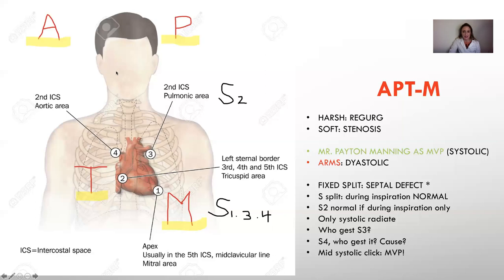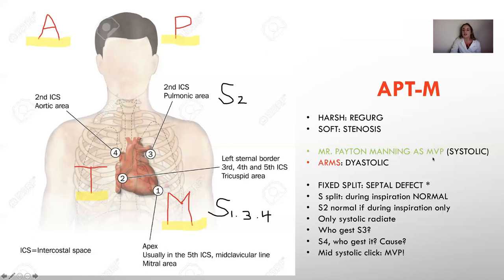His name is Peyton Manning. Funny story — I had made a video earlier and said I'm not a sports fan and I'm from another country, so I did not know who he was and said he was a baseball player. Turns out he's a football player. Anyway, for the purposes of the murmurs, all you need to know is that he is an athlete with very strong arms. Mr. Peyton Manning as MVP: MVP stands for most valuable player or mitral valve prolapse. MR is for mitral regurg, the P and M for physiologic murmur, AS for aortic stenosis, and MVP for mitral valve prolapse. This gentleman who lives in apartment M is known as an MVP.